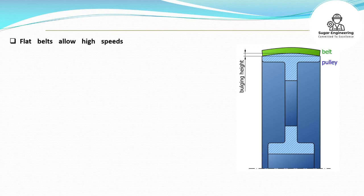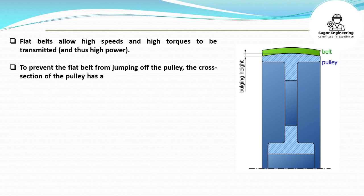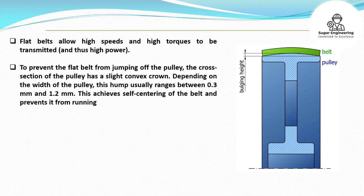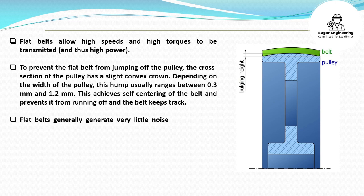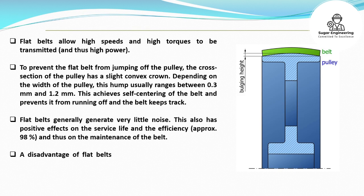Flat belts allow high speeds and high torques to be transmitted and thus high power. To prevent the flat belt from jumping off the pulley, the cross-section of the pulley has a slight convex crown. Depending on the width of the pulley, this hump usually ranges between 0.3 millimeters and 1.2 millimeters. This achieves self-centering of the belt and prevents it from running off. Flat belts generally generate very little noise, which also has positive effects on the service life and the efficiency — approximately 98% — and thus on the maintenance of the belt.